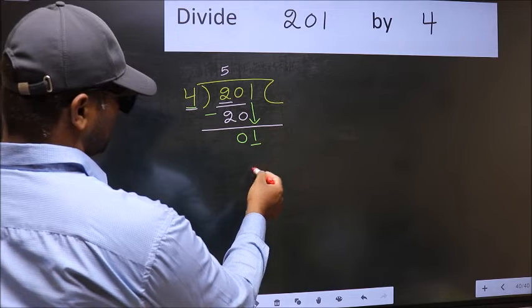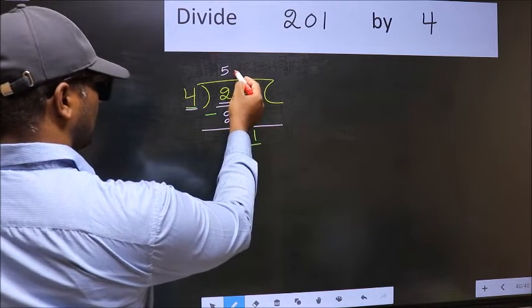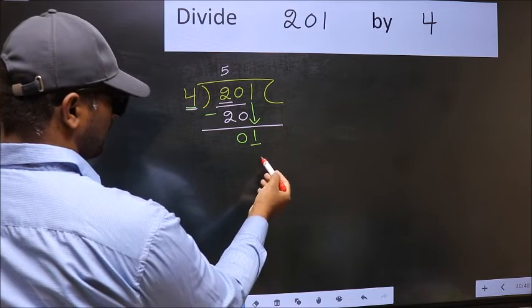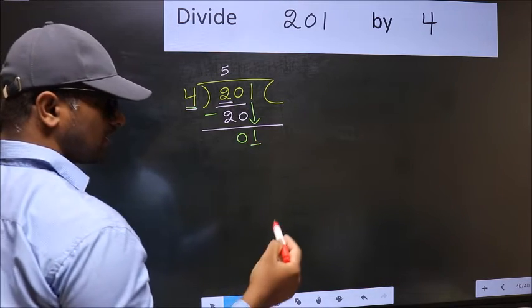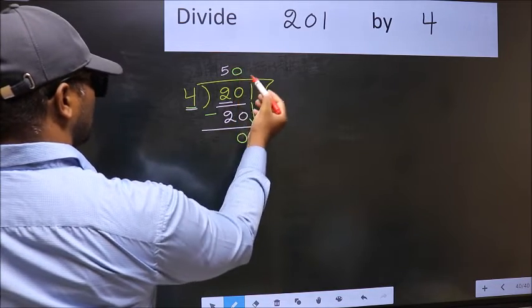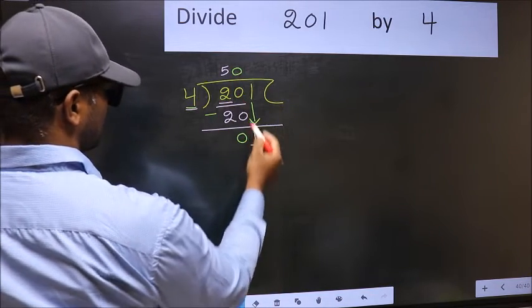What number should we write here? If I take 1 here, I will get 4, but 4 is larger than 1. So what we should do is we should take zero. So 4 into 0, 0.